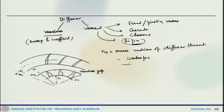Let us continue the discussion on turbo machinery. We will continue with the centrifugal compressor and then follow with the other compressor. This is where we stopped in the last lecture. We are talking about the diffuser and vaneless diffuser. This is the schematic of the geometry where we are talking about the gap, which is a vaneless gap. These are the different radii, and R4 is the mean radius of the diffuser throat.